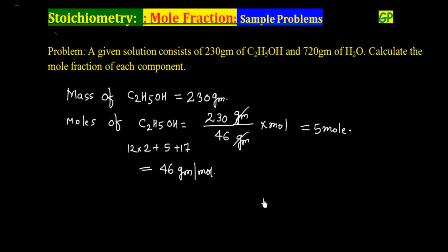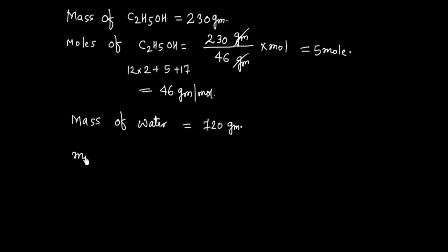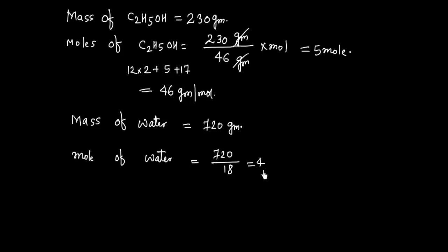Now let us calculate the moles of water. The mass of water is given as 720g. Moles of water equals 720 divided by 18, since the molecular weight of H2O is 18 g/mol. This gives 40 moles.